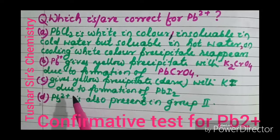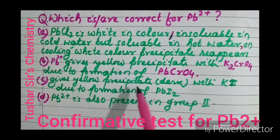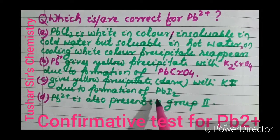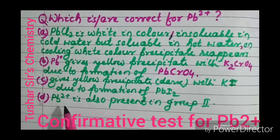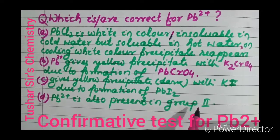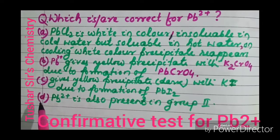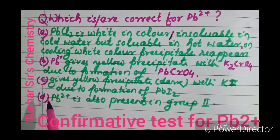Pb²⁺ gives a yellow precipitate with potassium iodide, that is PbI₂. Pb²⁺ is also present in Group 2. All these four options are correct.